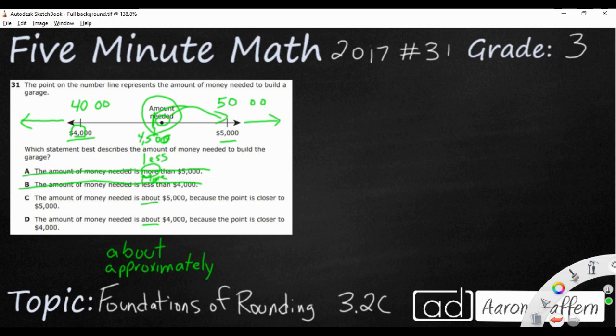So we're going to say the amount of money is about 5,000 or about 4,000? If we're still not sure, look what it says: is the point closer to 5,000 or to 4,000? The point is not closer to 4,000. It's closer to 5,000. So C is our answer.